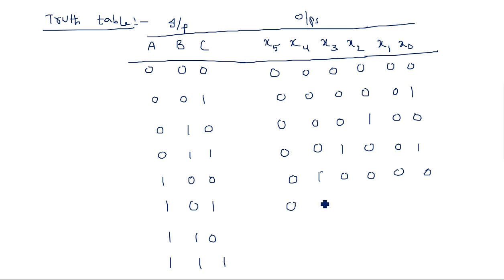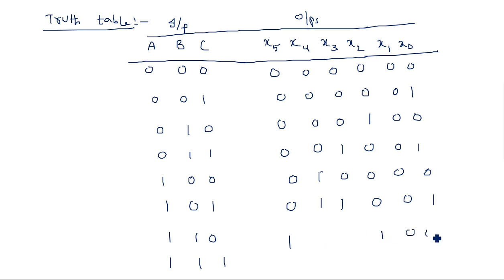5 squared is 25. That is 16 + 8 + 1 = 25, represented as 011001. 6 squared is 36, which is 32 + 4, represented as 100100. 7 squared is 49, which is 32 + 16 + 1, represented as 110001. This completes the truth table showing 3-bit inputs and their corresponding 6-bit square outputs.